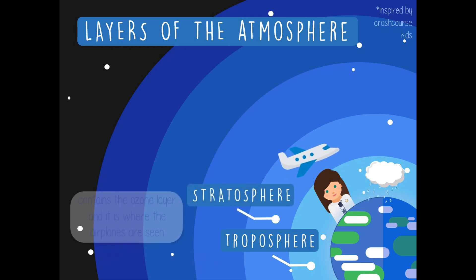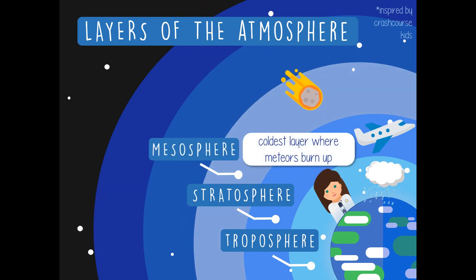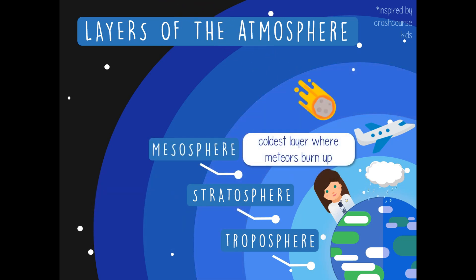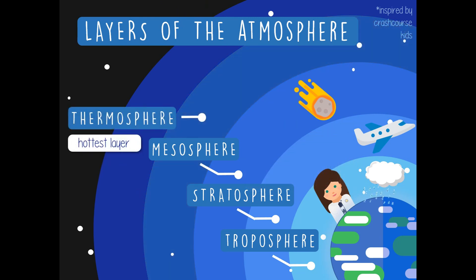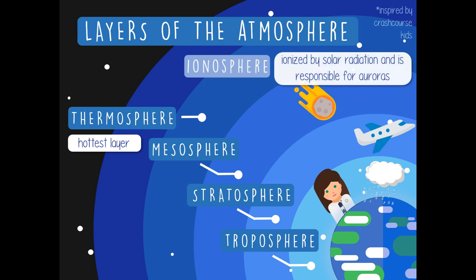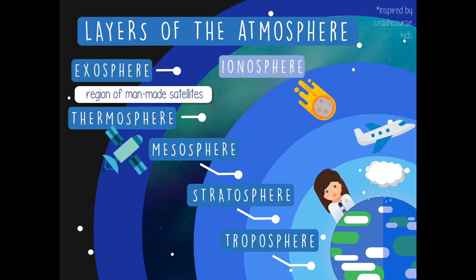Above the troposphere is the stratosphere, which contains the ozone layer and is where airplanes fly. Above the stratosphere is the coldest layer, called the mesosphere, where meteors burn up. Above it is the thermosphere — the hottest layer of the atmosphere, which contains the ionosphere, the region ionized by solar radiation and responsible for auroras. The final layer is the exosphere, the region of man-made satellites. Anything above the exosphere is already outer space.